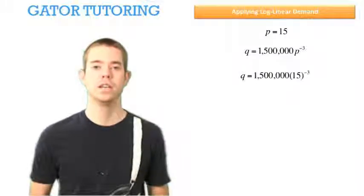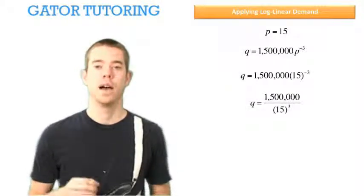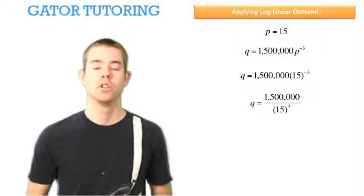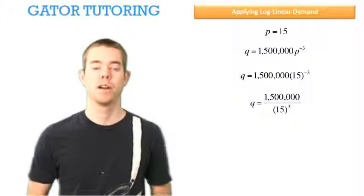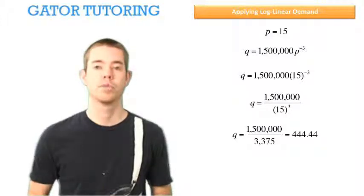We plug in 15. To help us solve, remember a negative exponent can be a positive exponent on the bottom of the fraction, so you can rewrite it as 1.5 million over 15 cubed. We solve for quantity and see that it's equal to 444.44.